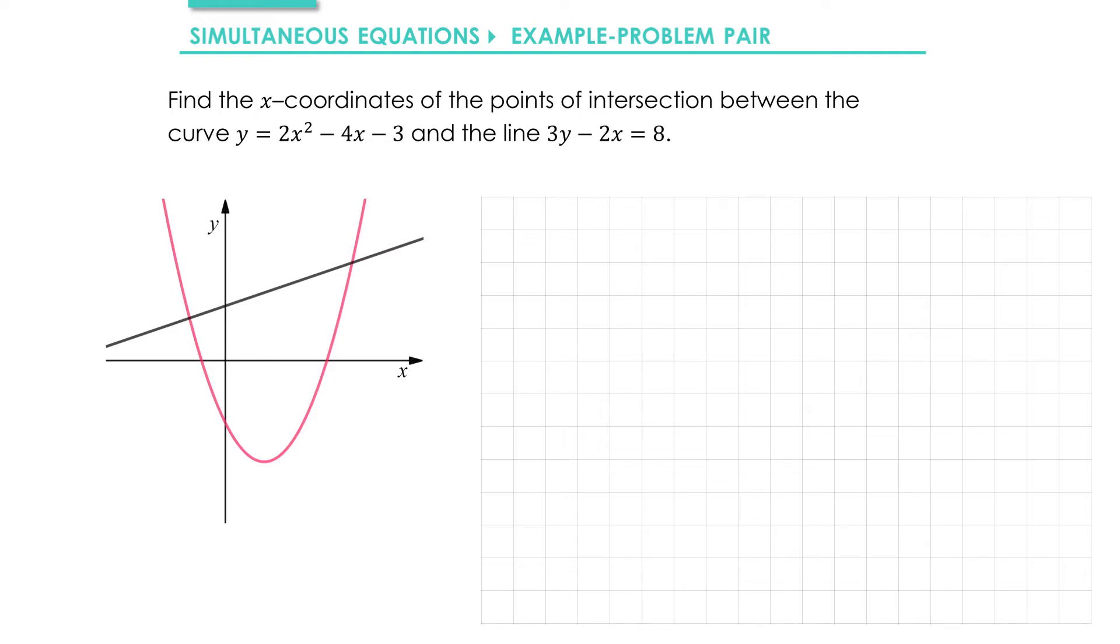So if we solve these simultaneous equations we'll be able to find those coordinates. In this question though we're actually only asked to find the x-coordinates. So if we find the values of x by solving these simultaneous equations, we'll have the x-coordinates of the points of intersection.